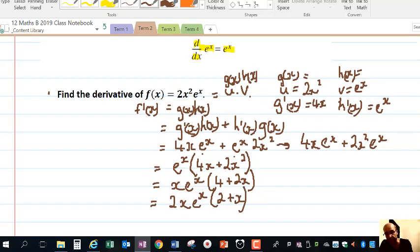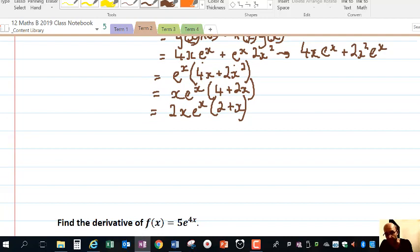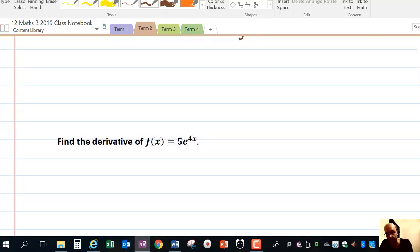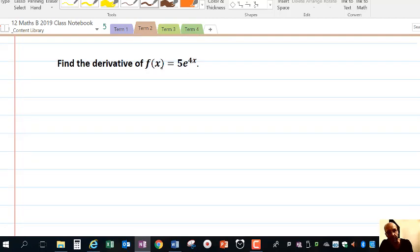Last example. We have, find the derivative of 5e to the 4x. Now this is a case where we can use the chain rule. It's only exponential functions here, but I'm going to use the other notation. I'm going to go dy dx. So let's say, let's call that y equals 5e to the 4x just so I can use different notations. dy du times du dx.